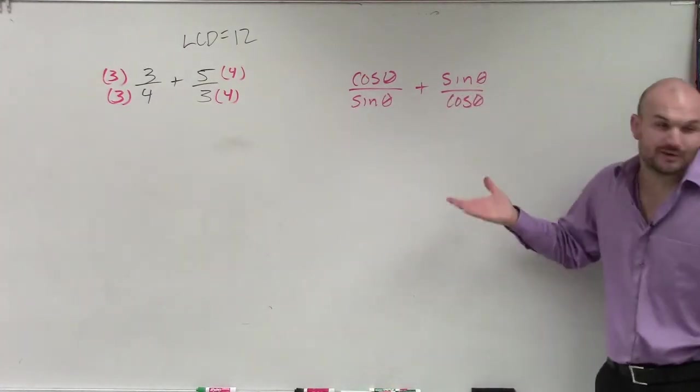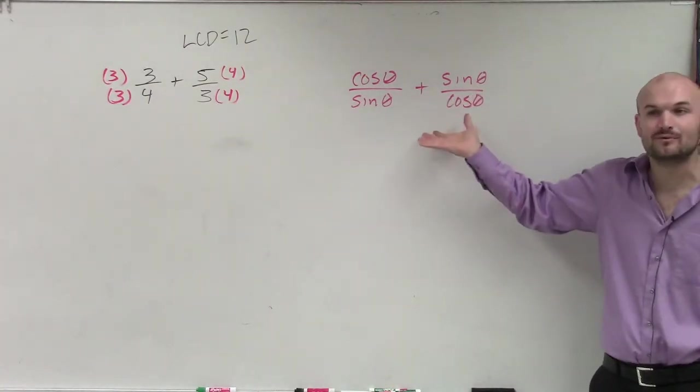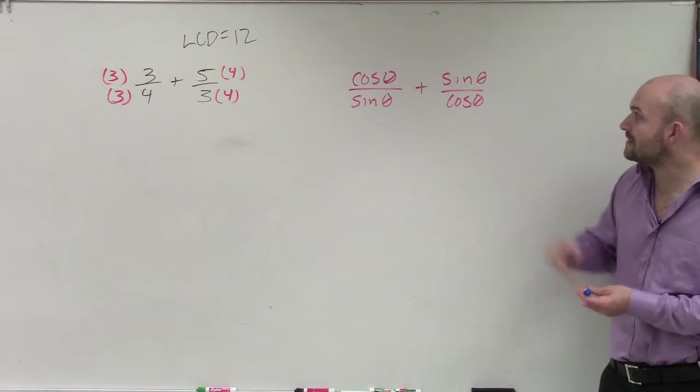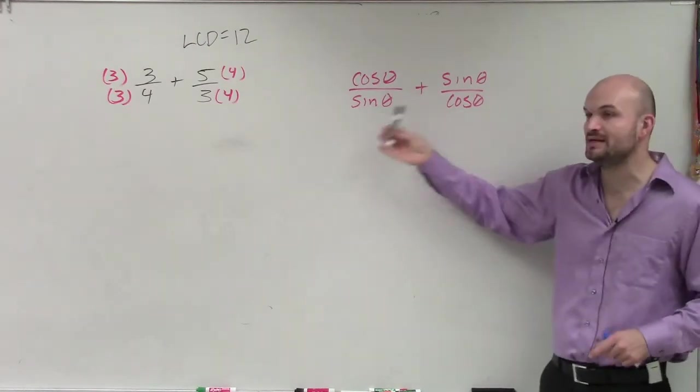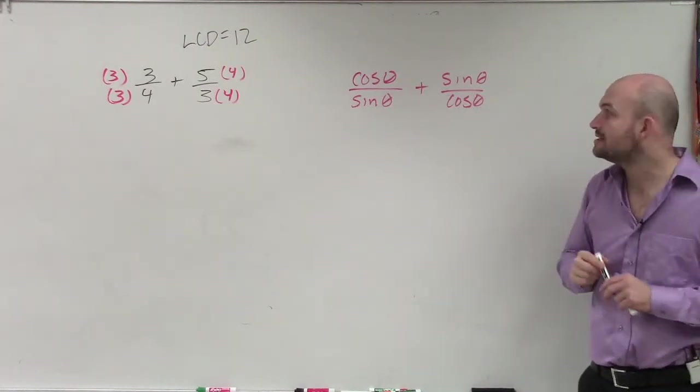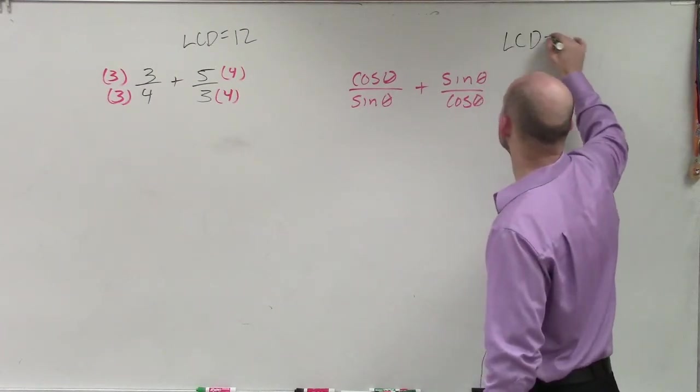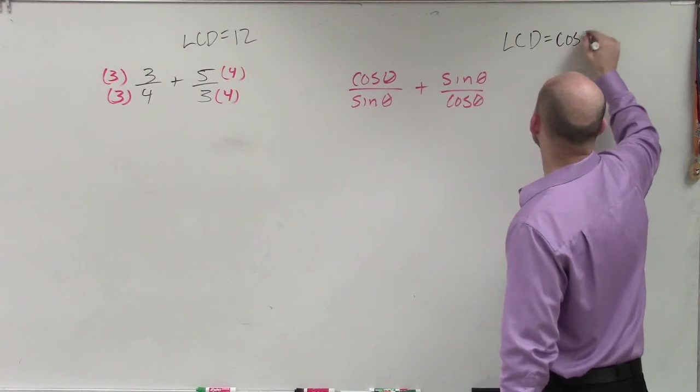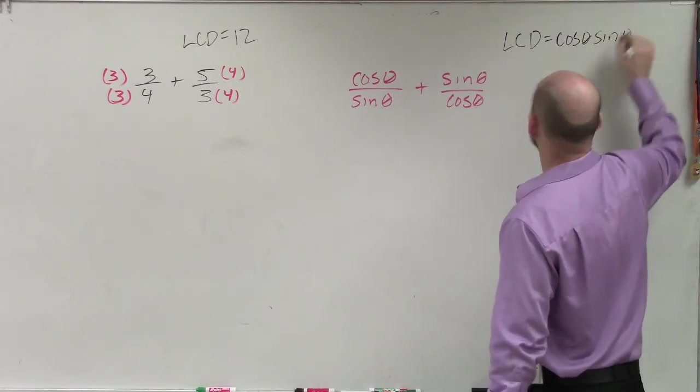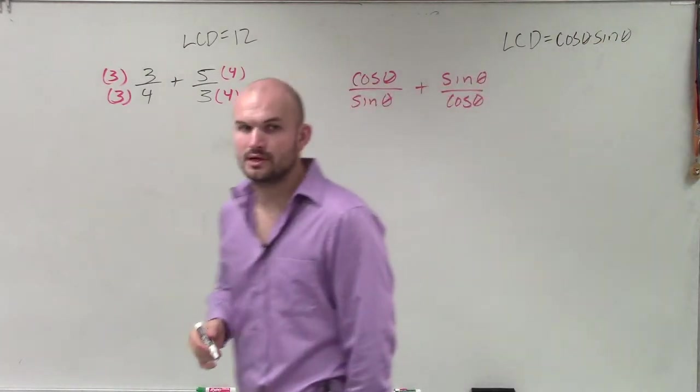OK. So now, all we're doing is just doing the exact same thing with trig. So if I look at these two, I say, all right, well, what would be the common denominator for sine of theta and cosine of theta? Well, the common denominator is just going to be the product of those, which would be cosine of theta sine of theta. All right?